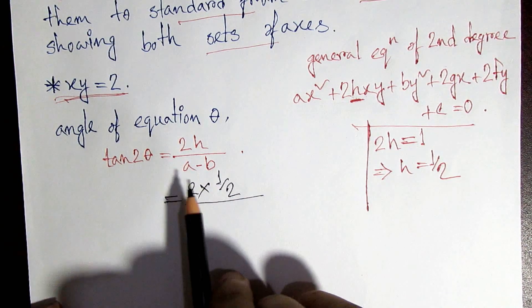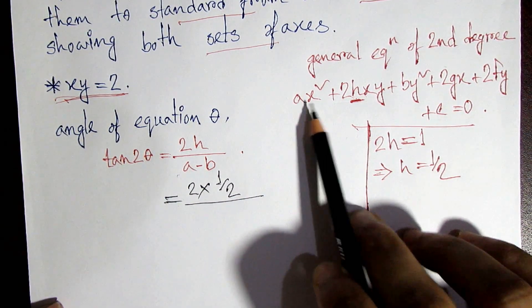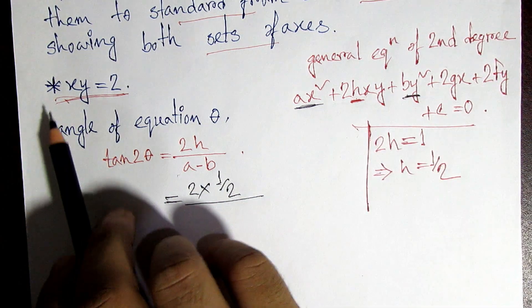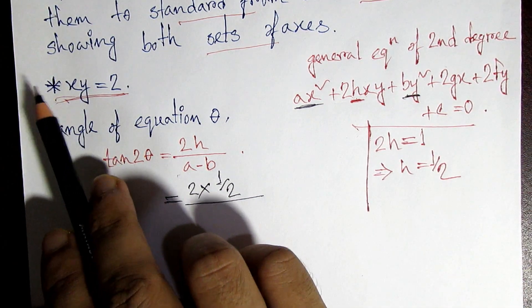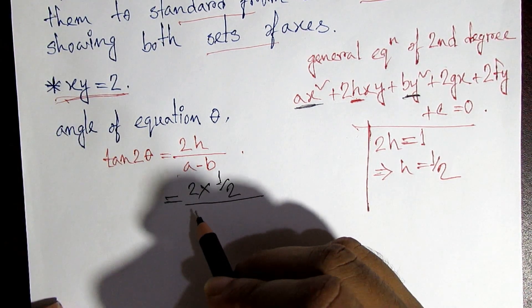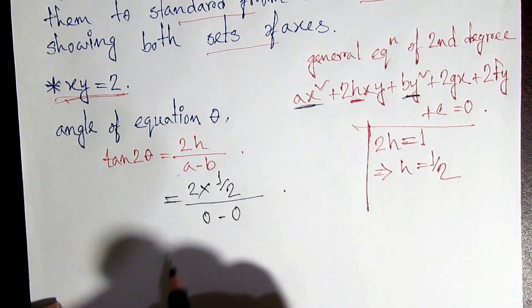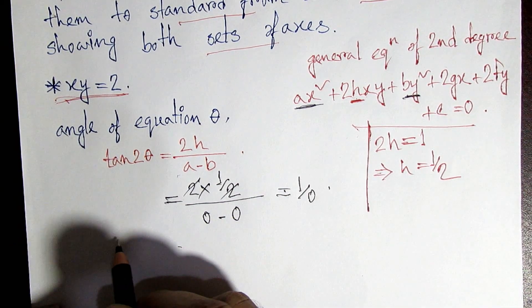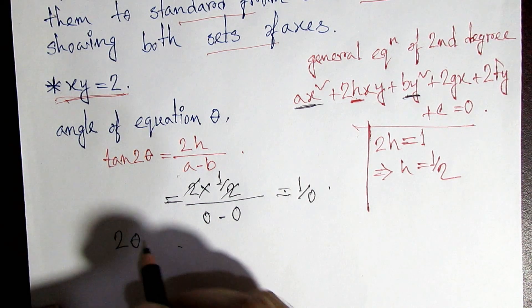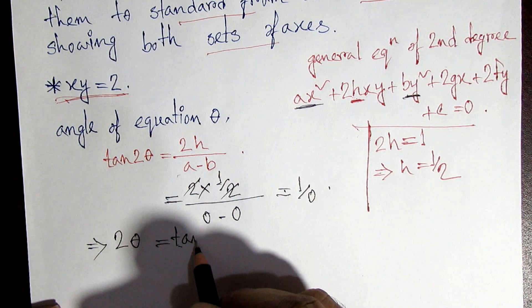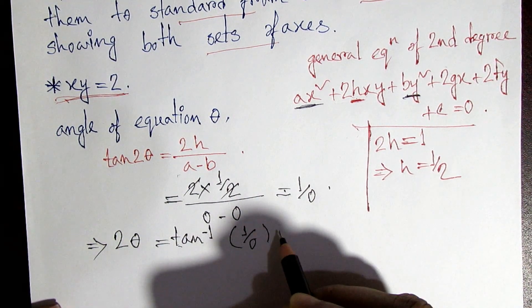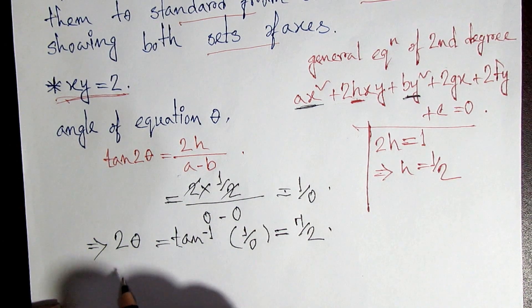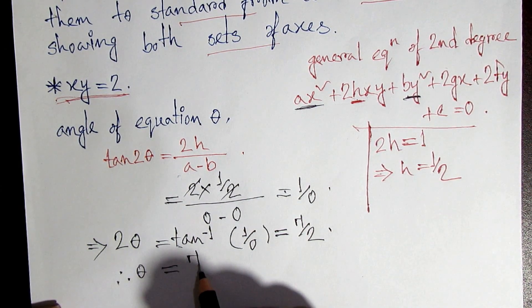2 into half gives us the h value. For a and b: a is the coefficient of x² and b is the coefficient of y², but neither x² nor y² terms are present, so a = 0 and b = 0. Therefore a − b = 0. So tan(2θ) = 1/0, which gives 2θ = π/2, and so θ = π/4.